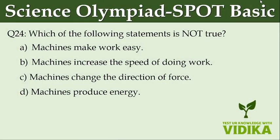Which of the following statements is not true? Option A, machines make work easy. Option B, machines increase the speed of doing work. Option C, machines change the direction of force. Option D, machines produce energy.